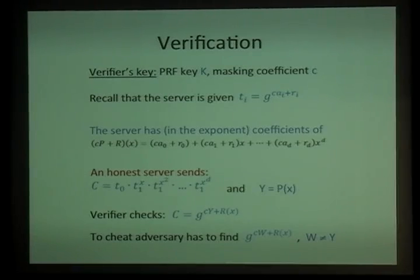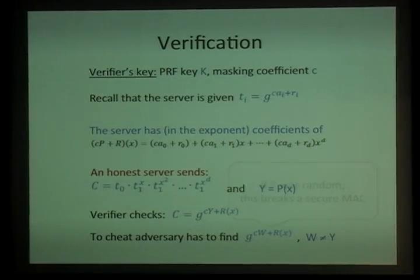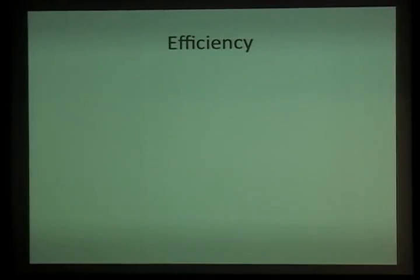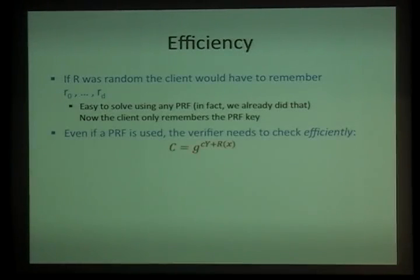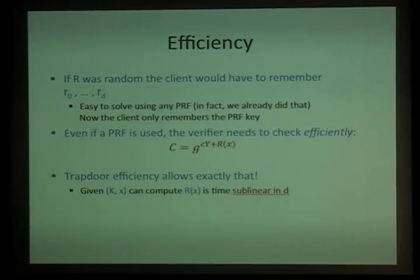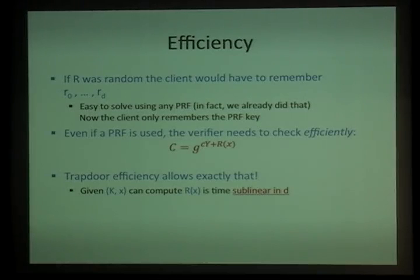The remaining question is how the verifier efficiently evaluates R(x). The verifier takes the value claimed by the server, recomputes the certificate, and checks. The difficult part is computing R(x), which the server computed directly by multiplying the tokens. Why can't the server cheat? Because c·w + R is a one-time MAC of the value — if R were random, the server cannot produce a MAC of any incorrect value. The verifier evaluates R(x) efficiently using exactly the trapdoor efficiency property: given the key, the verifier can compute R(x) in time sublinear in the degree of the polynomial.